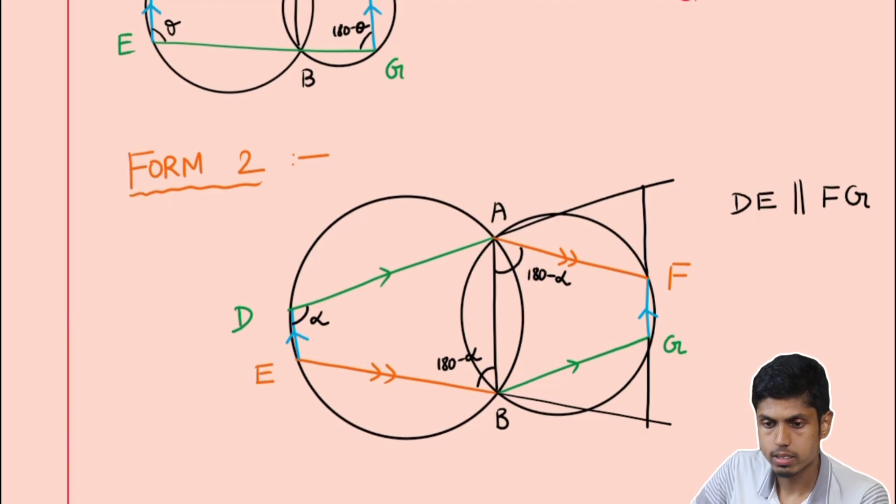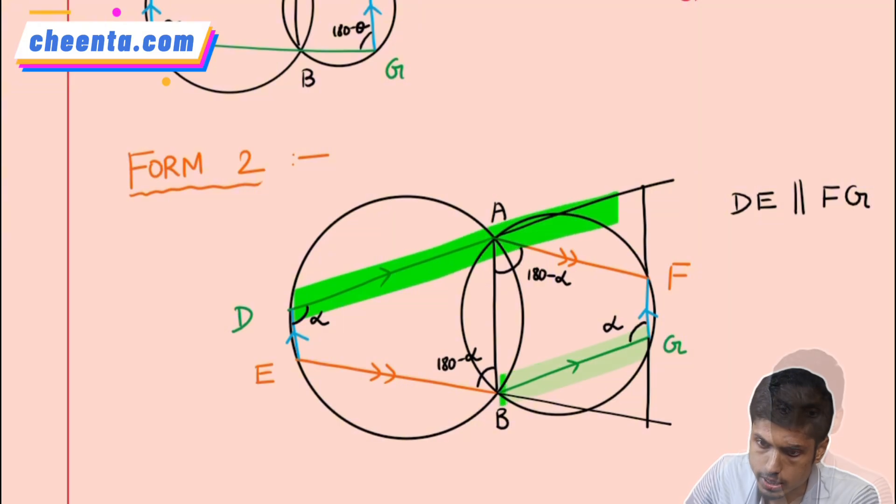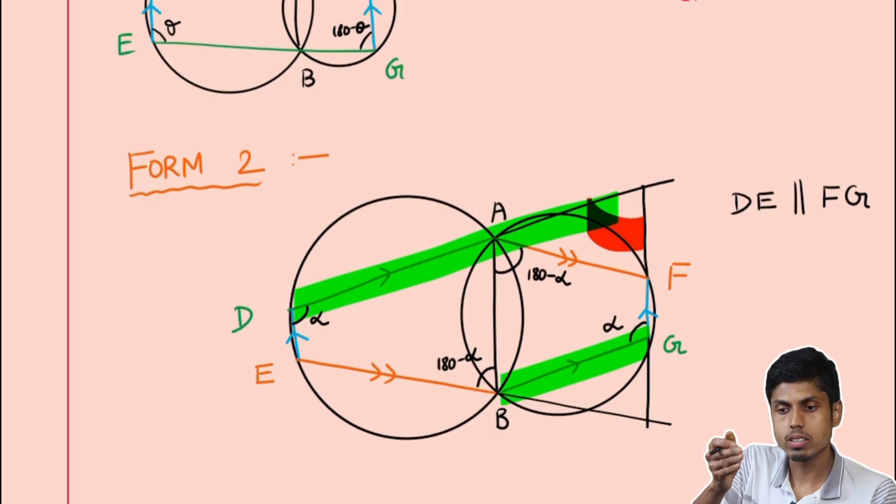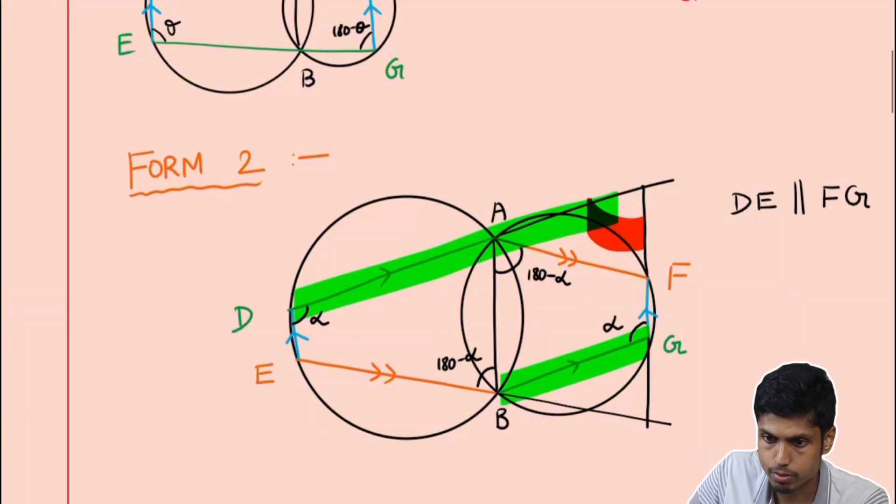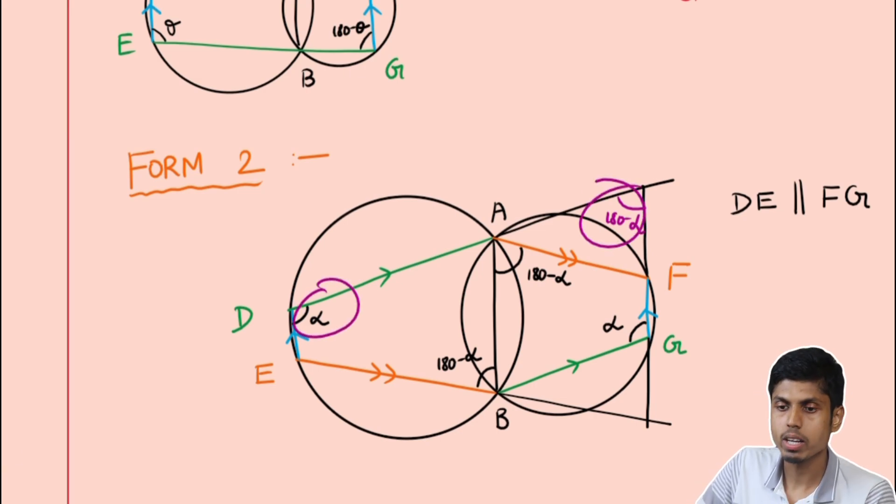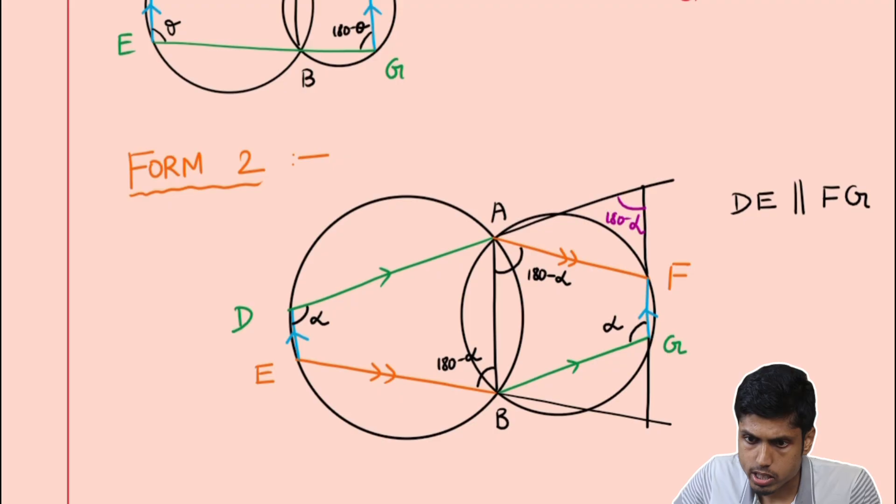They are just alternate interior angles. Now if this BAF is 180 minus alpha, I know that AFGB is a cyclic quadrilateral and opposite angles are supplementary. So I get FGB to be alpha. Observe now that DA is parallel to BG and the angle here is just in the same side of alpha with respect to those two parallel lines. So that will be 180 minus alpha. And we observe that alpha and 180 minus alpha lie on the same side of two lines making them parallel.